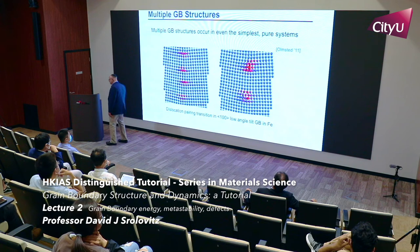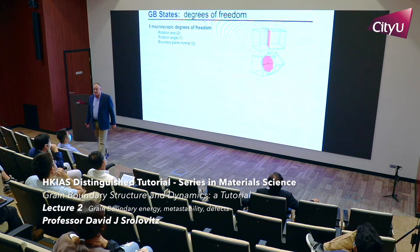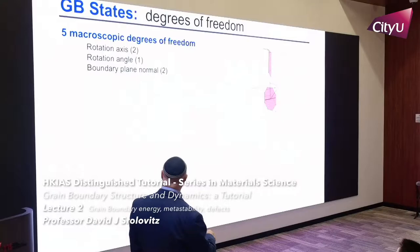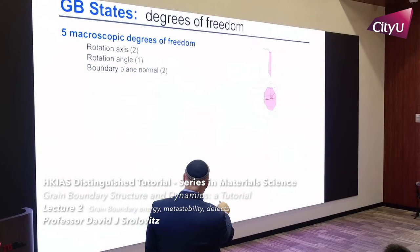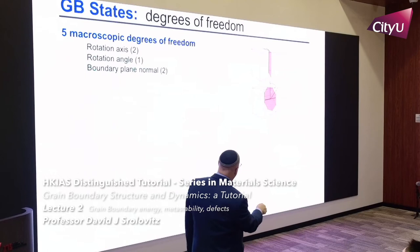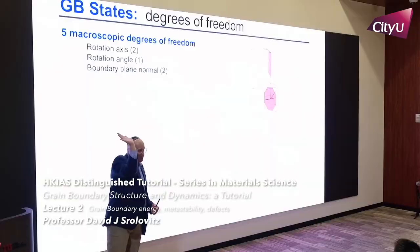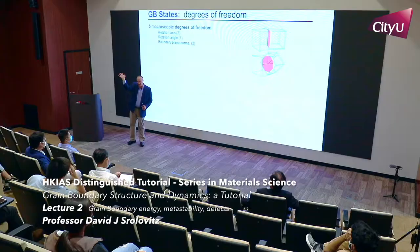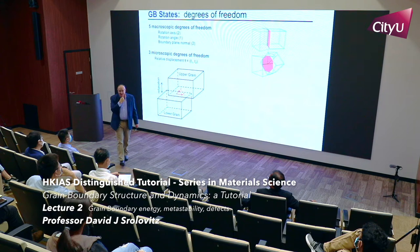As discussed last time, a grain boundary is described by five macroscopic degrees of freedom: the rotation axis (two angles) and rotation angle about that axis — three degrees for misorientation — plus two degrees for the grain boundary plane normal. You can have a pure twist, a pure tilt, or anything in between. However, five degrees of freedom do not fully define the grain boundary structure — there are also microscopic degrees of freedom.